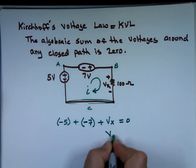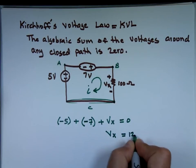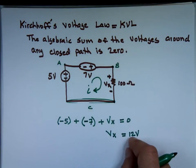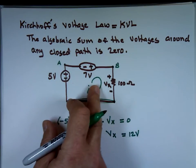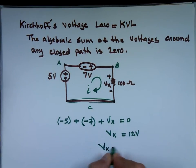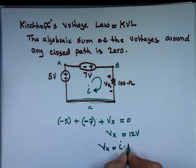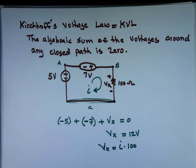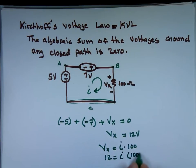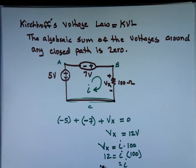Can we figure out what Vx is? 12 volts. So the voltage across the resistor is 12 volts. If I really want to find the current, I can use Ohm's law: the voltage across the resistor Vx equals the current I times the resistance, which is 100. Vx is 12, so I equals 0.12 amps.